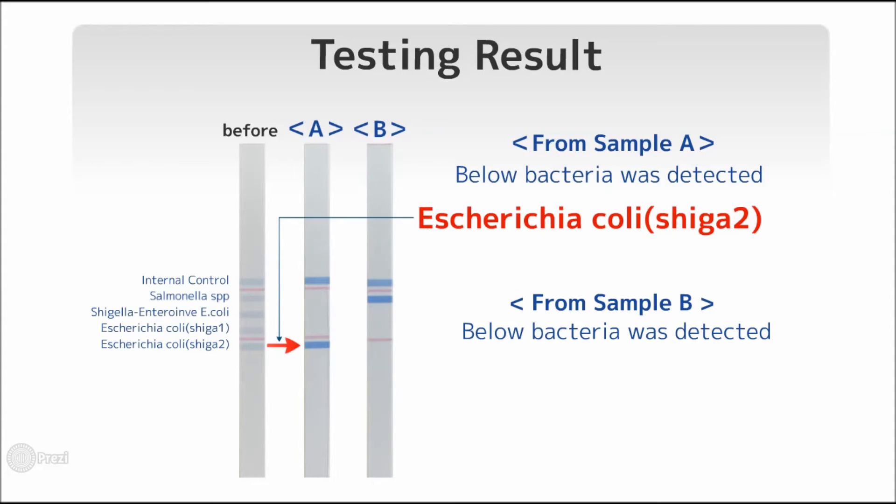For sample B, color developed in the second line from the top, indicating that Salmonella SPP has been detected. In this way, STH Pass makes visual inspection easy.